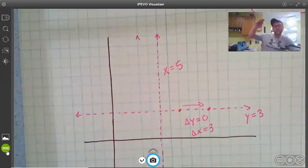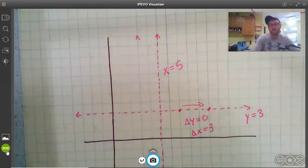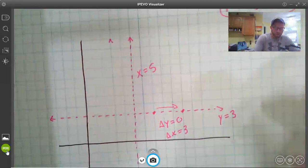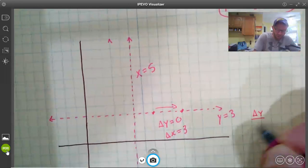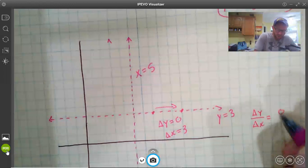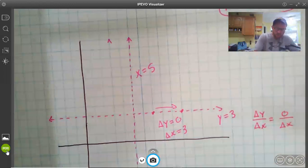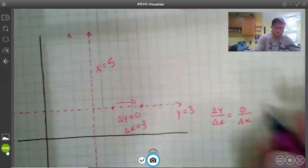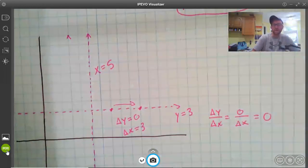The change in y, how far the line goes up or down, is always going to be 0 because it's horizontal, it's flat, it doesn't rise, it doesn't fall. So the change in y over change in x is always going to be 0 over whatever change in x I choose.